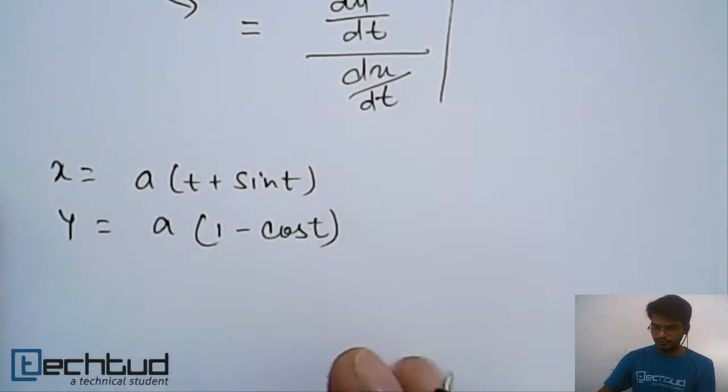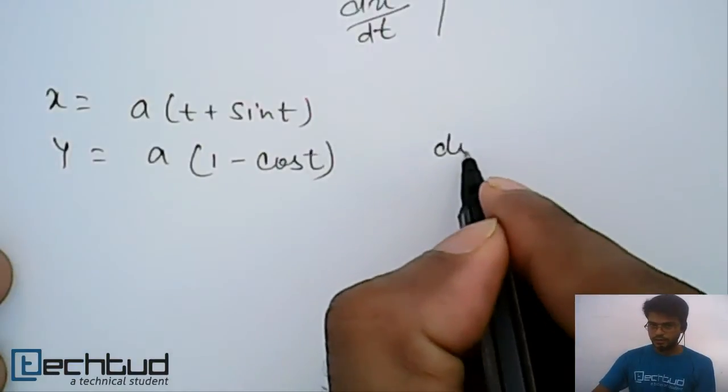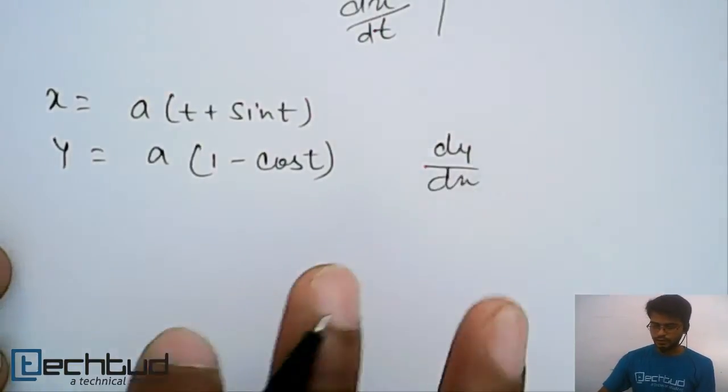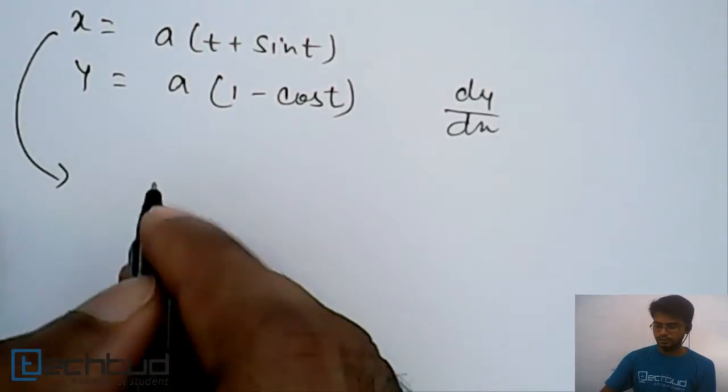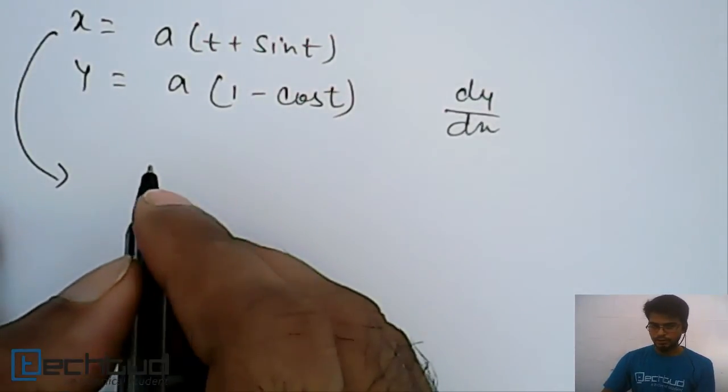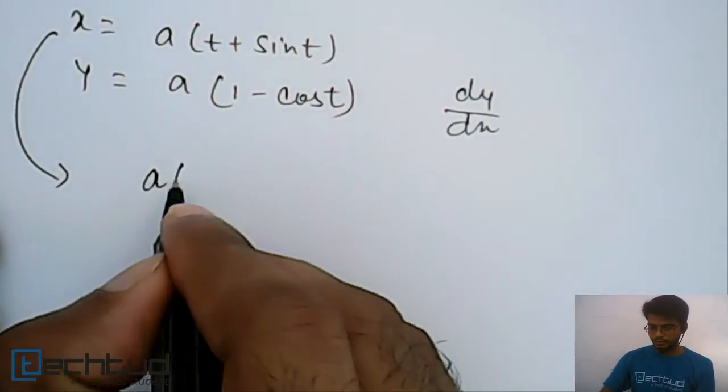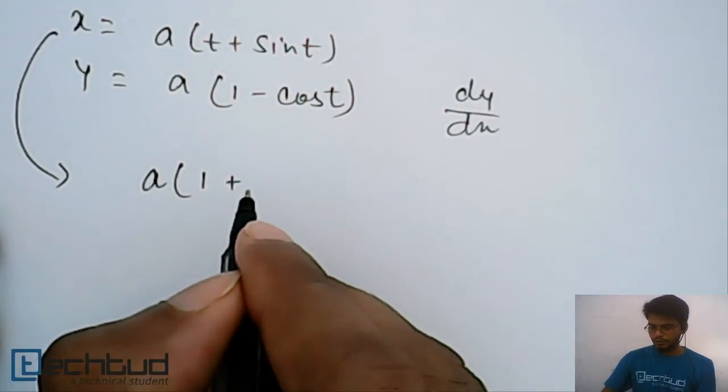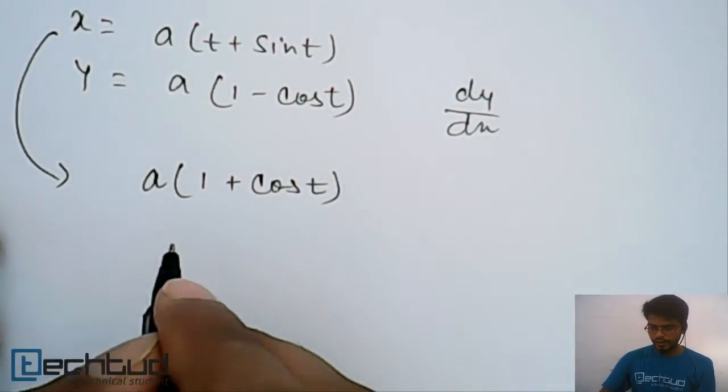So in this case we have to find out dy/dx. What do we do? First differentiate this with respect to t, so it will become, a is common, so it will become 1 + cos t.